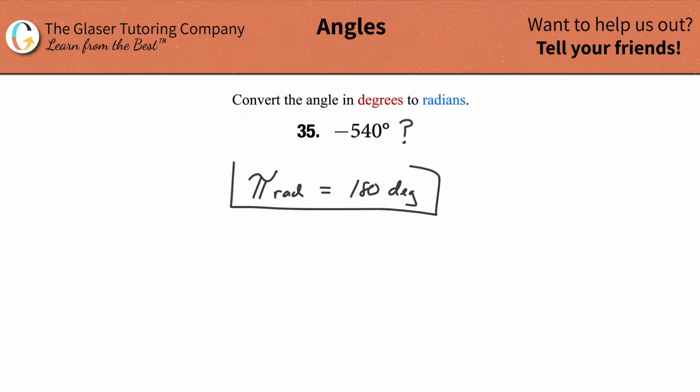We have to start with this, keep that on the side. The first thing that I'm going to do in actually setting up my conversion is writing down the given value, negative 540 degrees. Instead of writing the symbol, I'm going to write out the word.